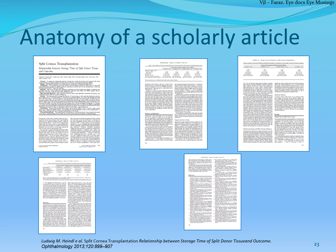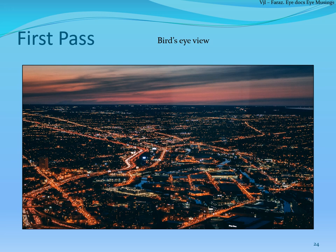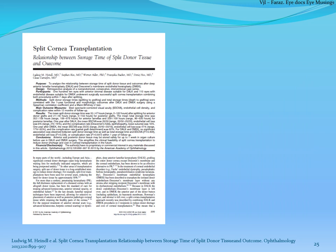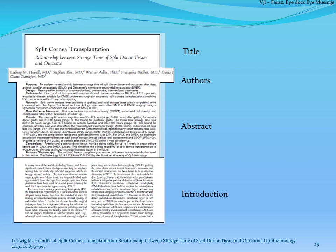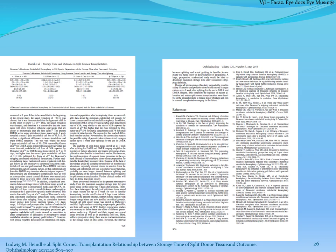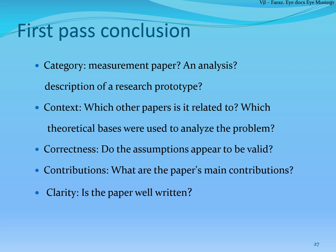Using the same example paper cited in this presentation, the first pass should be a bird's-eye view. You look at the title, read the abstract thoroughly, give a reading of the introduction, then look at the conclusion and the references. By the end of the first pass you should be able to understand what type of paper it is, whether the assumptions are valid, what the main contribution is, and whether the paper is well written.